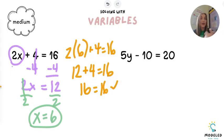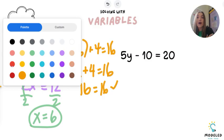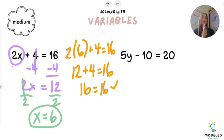Let's move on to the one on the right: 5y minus 10 equals 20. First, I need to get that number out of the way. I need to get that 10 taken care of. I see that the 10 is being subtracted, so in order to reverse that, I need to add it.